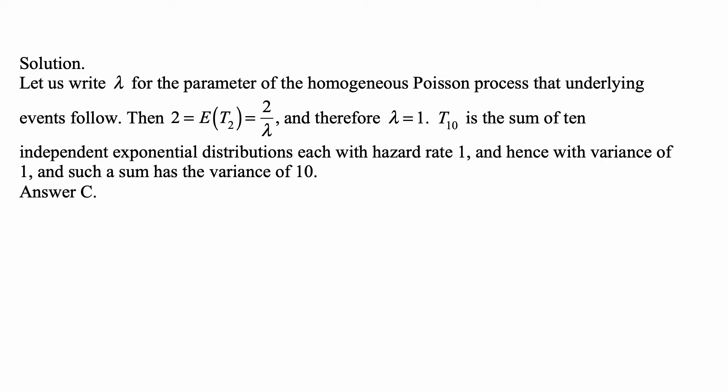T_10 is the sum of 10 independent exponential distributions, each with hazard rate 1, and hence each with variance 1. Such a sum has variance of 10. That's answer C.